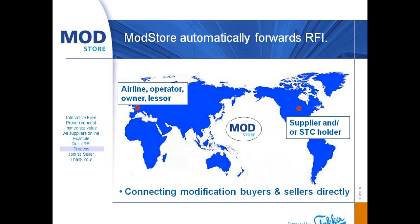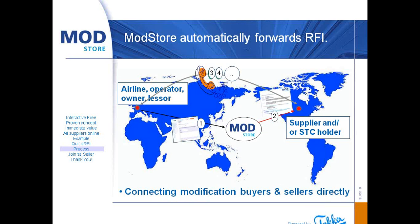So, you have a requirement and you quickly send it in. It is automatically forwarded by Modstore to the supplier or SDC holder, and they contact you by phone if you leave your number, or by email.